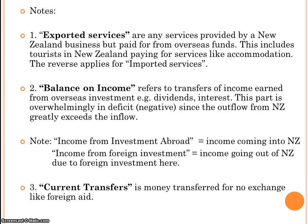The balance on income is the one that seems to trick most people — it's income travelling from one country to another, usually in the form of dividends and interest. If you've got investment in shares overseas and those shares pay out dividends that are returned to New Zealand, that's an inflow. When overseas investors put their money in New Zealand bank accounts, earn interest, and transfer that interest overseas, that's an outflow. Focus on dividends, interest, and profits — that's money in and money out for that part.